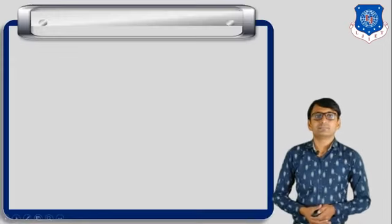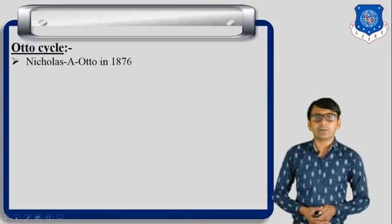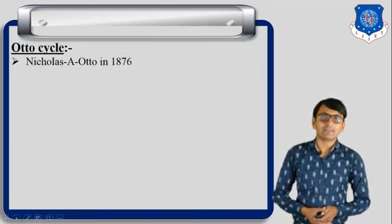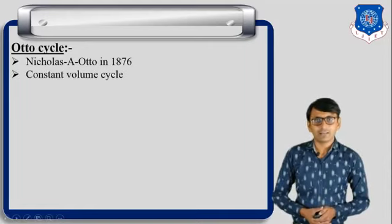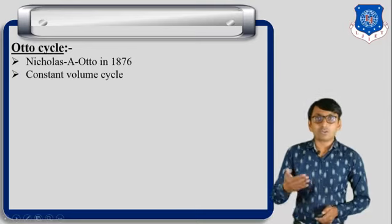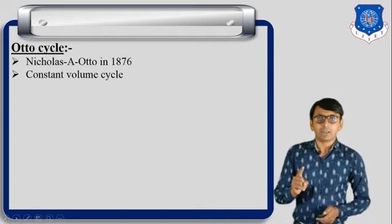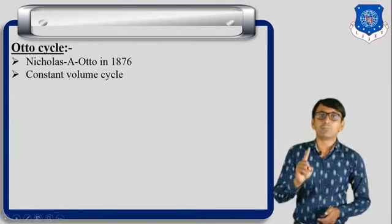The first topic is the Otto cycle. Nicholas A. Otto, a scientist, first invented this Otto cycle in 1876. It is also called the constant volume heat supply process because in this cycle heat is supplied in a constant volume process.